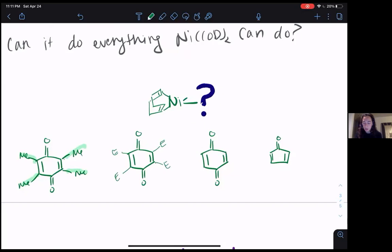You could imagine that you could just put groups here, for example, or you could imagine you can change the backbone of the other ligand completely and use something like... This is called a cyclopentadienone.